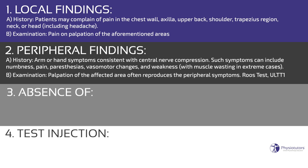b. Examination — palpation of the affected area, like the scalene triangle or pectoralis minor insertion site, often reproduces the peripheral symptoms. Peripheral symptoms are often produced or worsened by provocative maneuvers that are believed to narrow the scalene triangle, like the Roos test, also known as the elevated arm stress test, or to stretch the brachial plexus, like in the ULTT1.